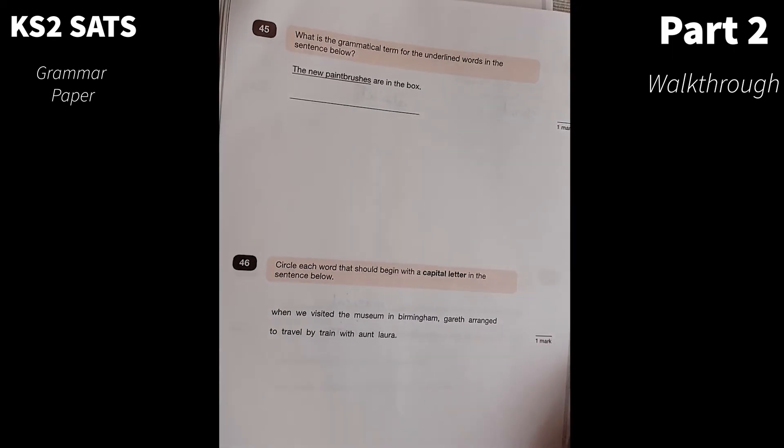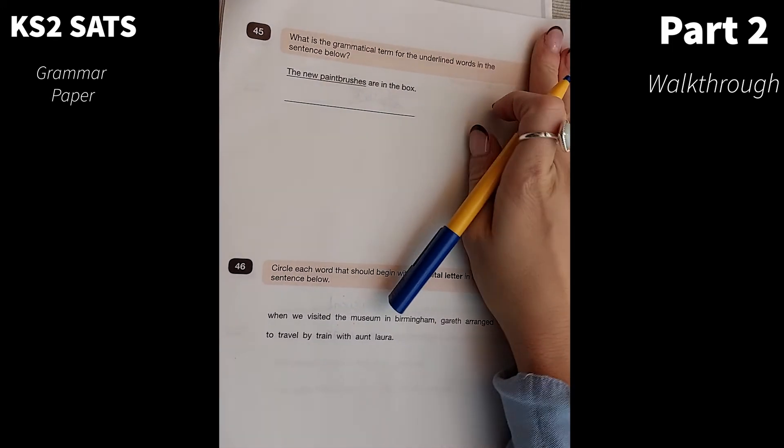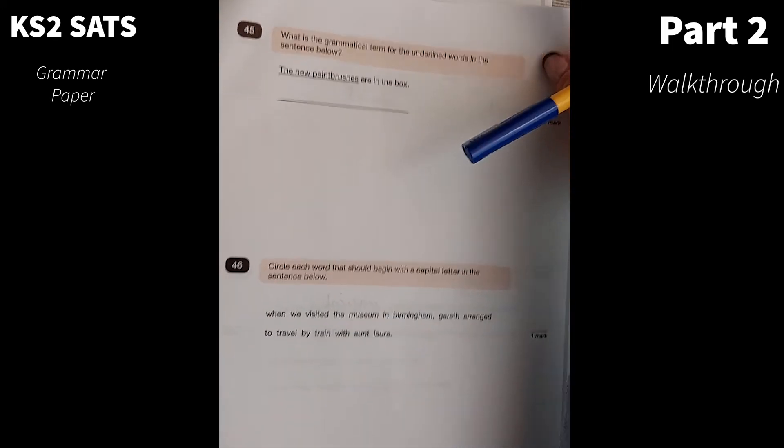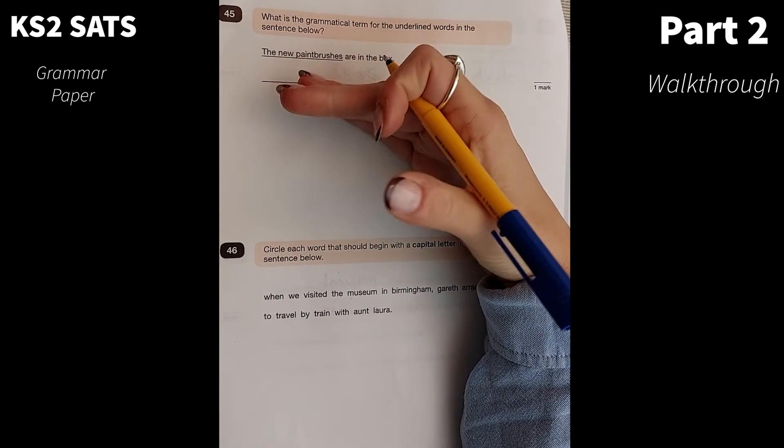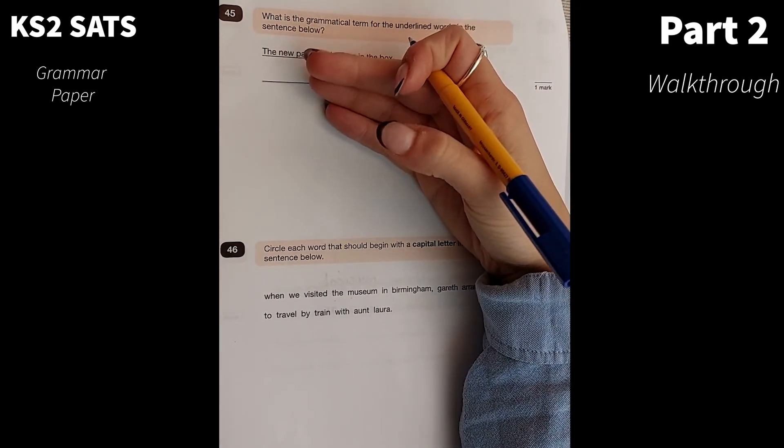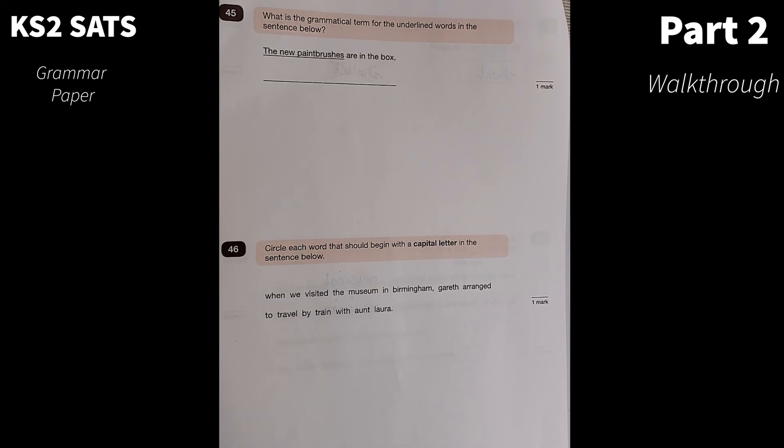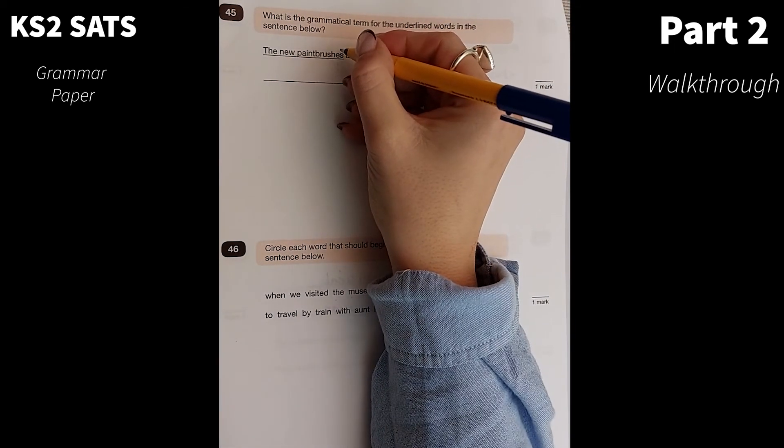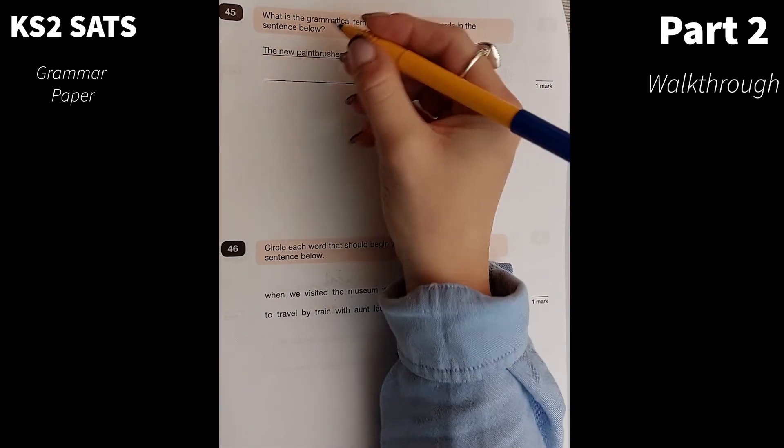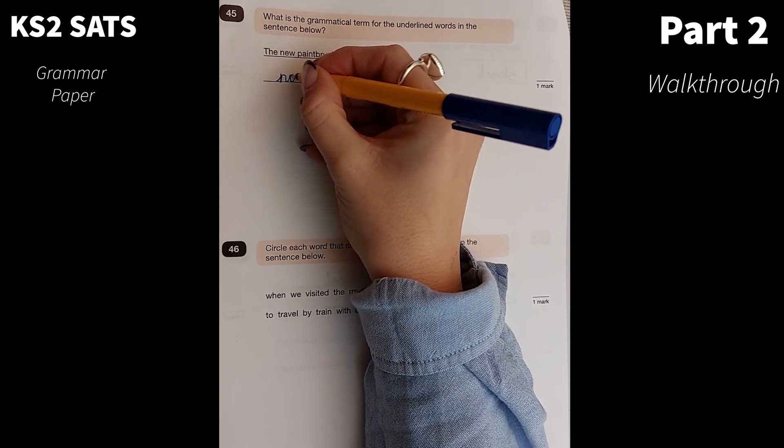Number 45. What is the grammatical term for the underlying words in the sentence below? The new paintbrushes. I'm guessing people will put all kinds of random answers, like fronted adverbials and things like that. But paintbrushes is my noun and new is my adjective. So here I have a noun phrase.